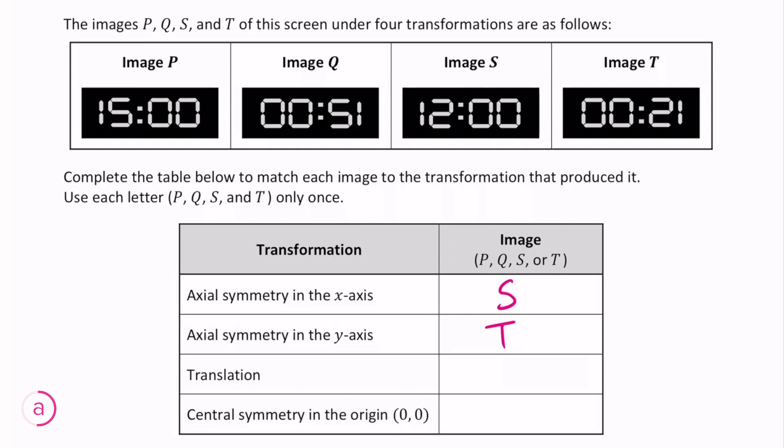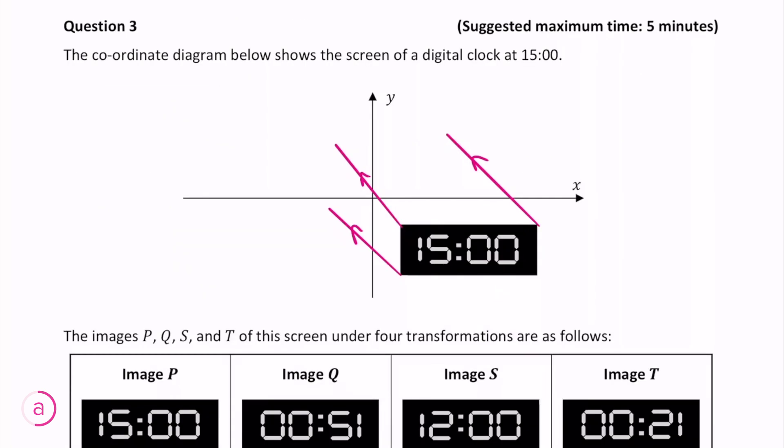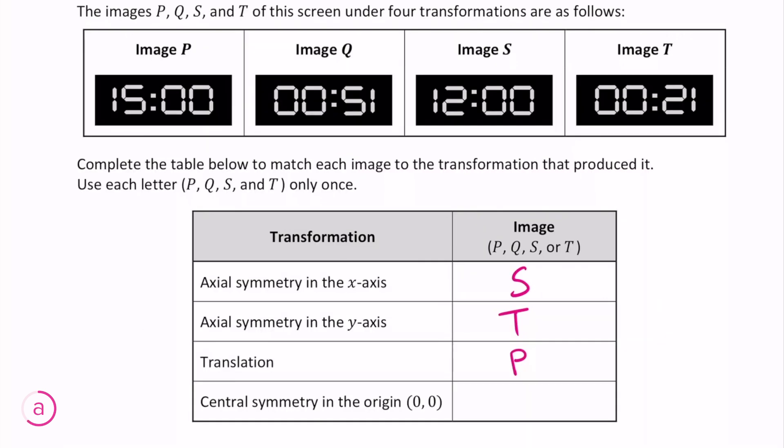The next one is a translation. A translation involves moving each of the points an equal distance in a certain direction but does not change the orientation of the image. Therefore the correct image for this transformation is P, as it's the same as the original image.